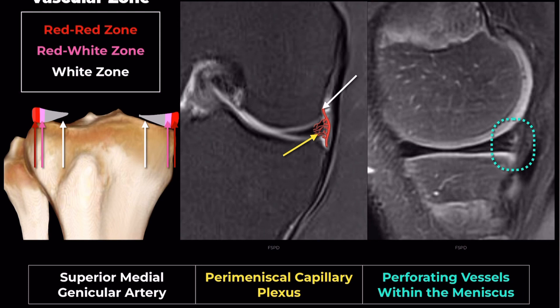This highlights the potential for variation in vascularization due to factors like diabetes or age. Many surgeons are now adopting more aggressive tactics, performing repairs in the red-white and white zones. Thank you for watching this video.